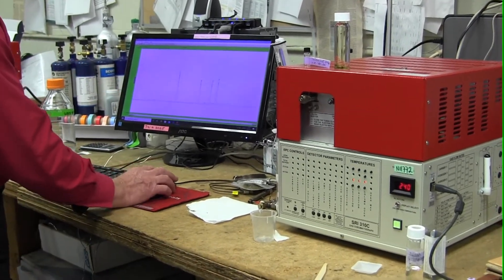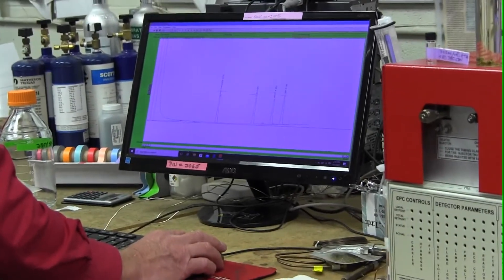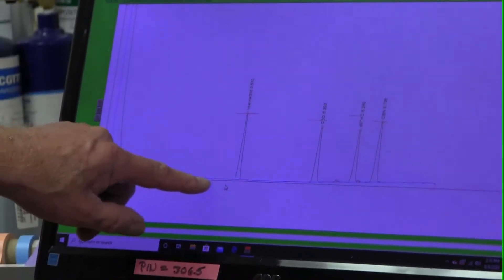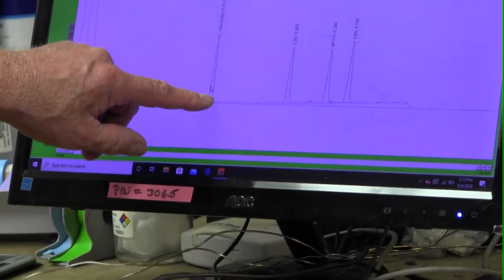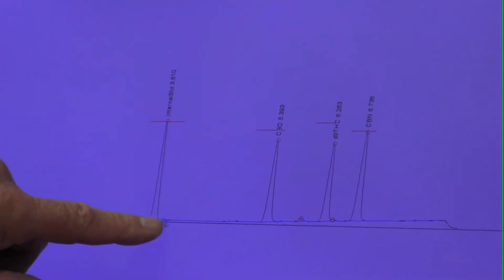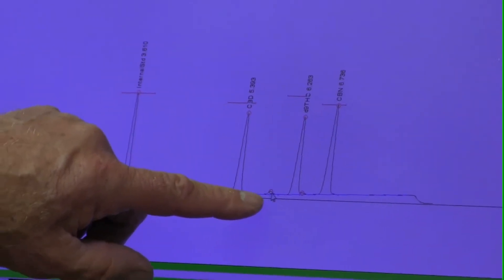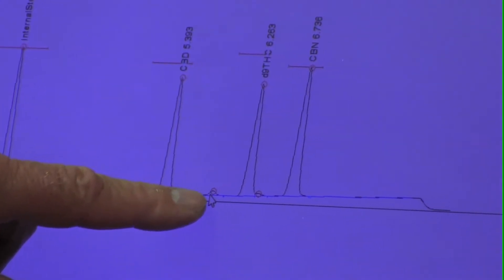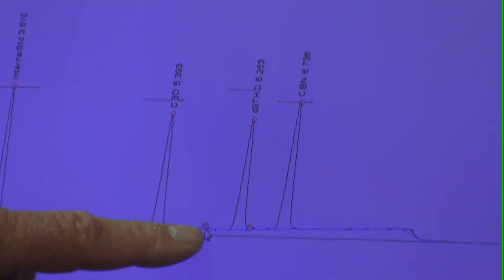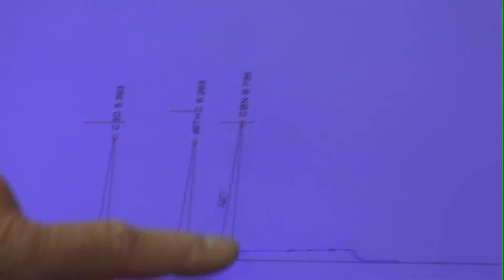So you can see when we injected the calibration standard, we got the big solvent peak, which is the acetone. And then we got the methyl stearate, which is the palm oil that we put in the acetone to make it dirty. So that's the methyl stearate peak. And then this is the CBD peak. There's a little something here, which is delta-8. It always seems to occur when you buy the THC-9 standard. You always get a little delta-8 impurity. This is the delta-9 THC standard, and this is the CBN standard.